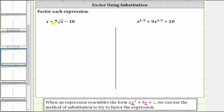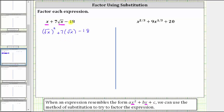Looking at the first expression, we have x plus seven square root x minus 18. Notice how the variable factor of the middle term is the square root of x, and the variable factor of the first term is just x. In order for this to be in the correct form, if we square the square root of x, we need to get x — and this does give us x. So we can write the given expression as the square root of x plus seven, times the square root of x minus 18. The expression is in the form ax squared plus bx plus c, and therefore we can try to use the method of substitution to factor it.